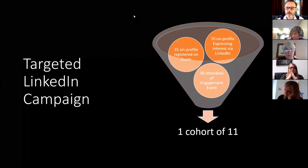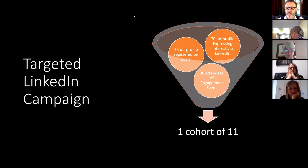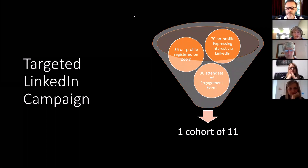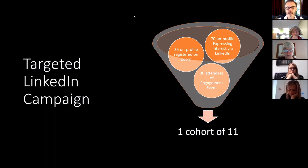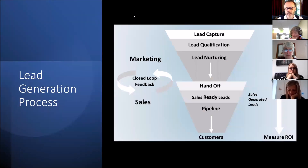That's our seven-step process for a particular programme. We know our numbers: to get 11 people onto the programme, we need 70 people expressing interest via LinkedIn, which leads to about half — 35 — registering on Zoom, then around 30 attending the event itself, and through follow-up activities we end up with 11 people on board. Knowing the process and knowing the numbers is exactly what this is about.